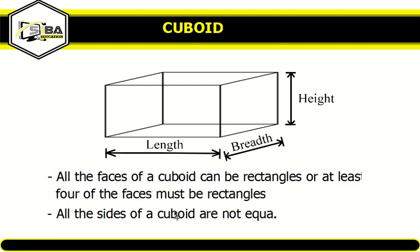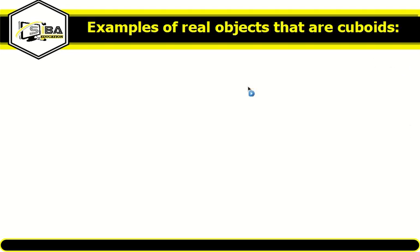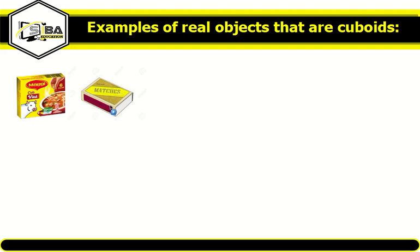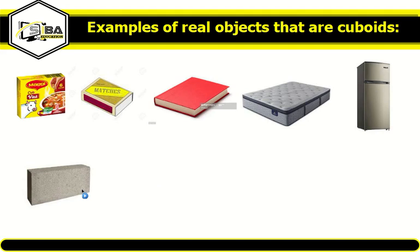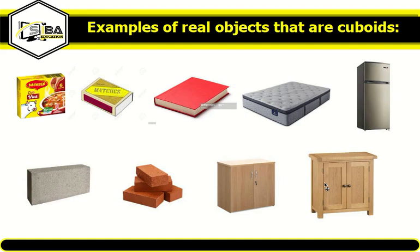Now let's look at examples of some objects that have the shape of a cuboid: the Magic Cube box, the matchbox, our books, mattresses, the fridge, cement blocks, bricks, wardrobes, and cables. All these are examples of cuboids.